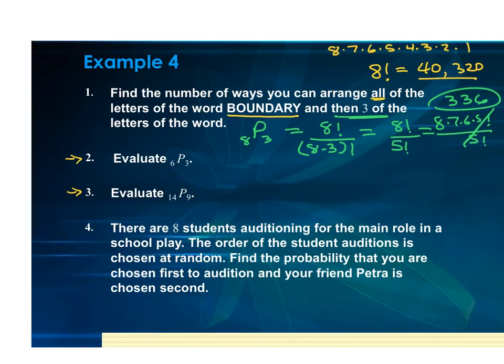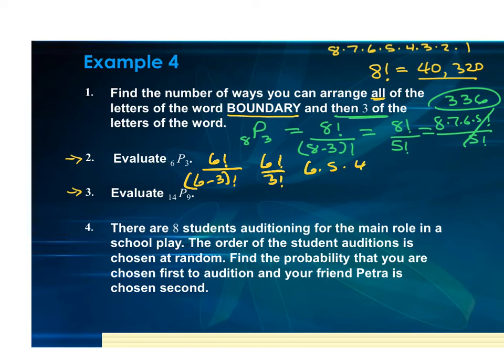To evaluate P(6,3): six factorial over (6 minus 3) factorial, which is six factorial over three factorial. Expanding: six times five times four times three factorial over three factorial. The threes cancel, leaving six times five times four — that's 30 times four, which equals 120.